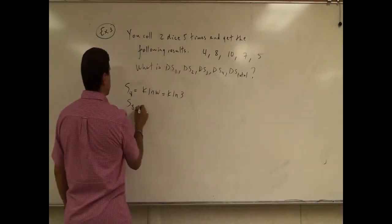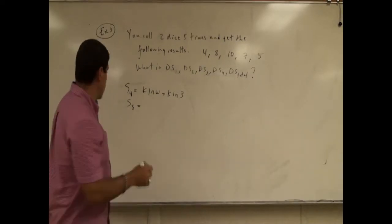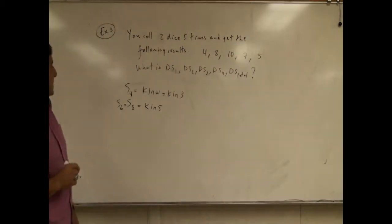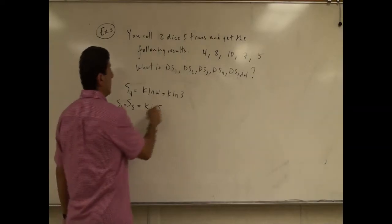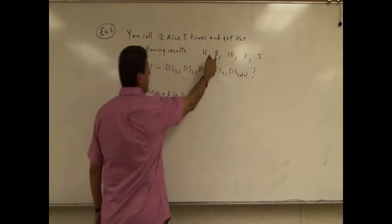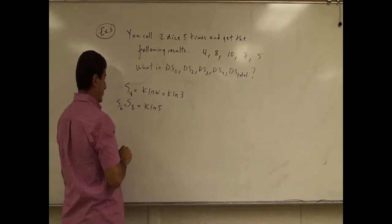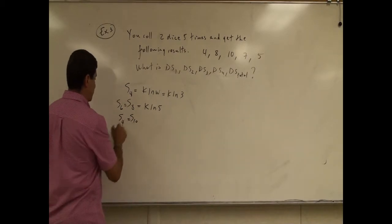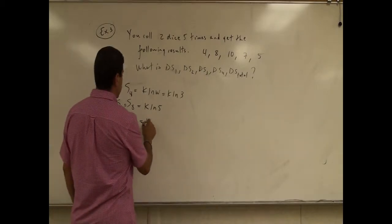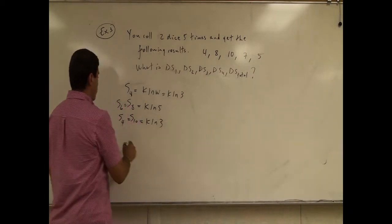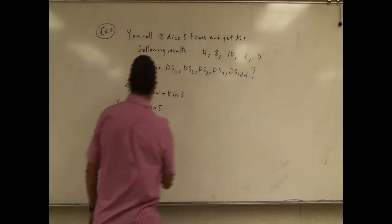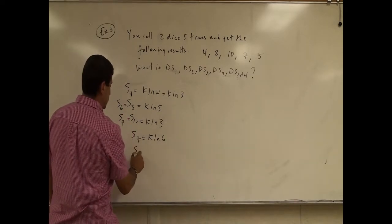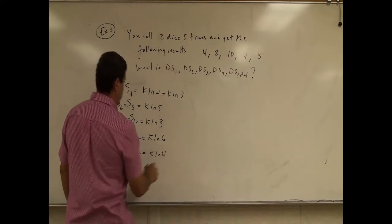Eight — how many ways of getting eight were there? Well, eight was similar to six, so S6. There were five ways of getting six, so the entropy of the eight macrostate was kln(5). How about ten? Ten was similar to four, and the entropy of that was kln(3). The entropy of macrostate seven was the highest one — six ways of getting seven. And then entropy of state five was kln(4).